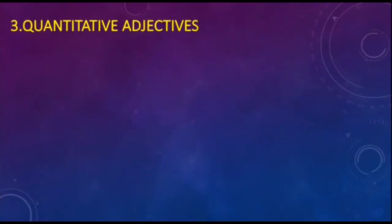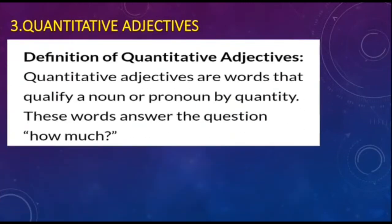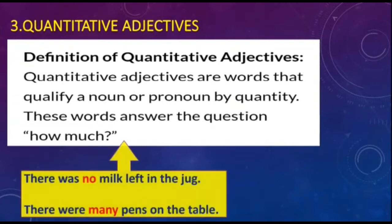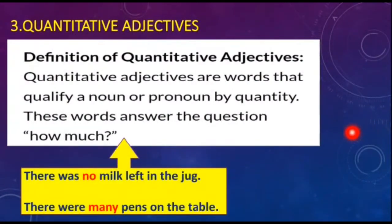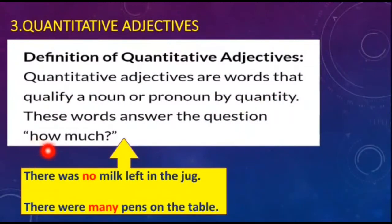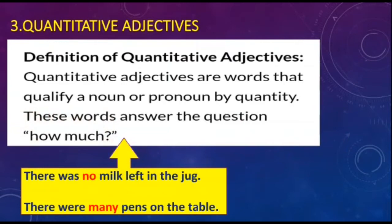The third category is quantitative adjectives. Quantitative adjectives are words that qualify a noun or pronoun by quantity — they answer the question 'how much.' For example, 'There was no milk left in the jug' — here 'no' is a quantitative adjective because it tells about the quantity in the jug.